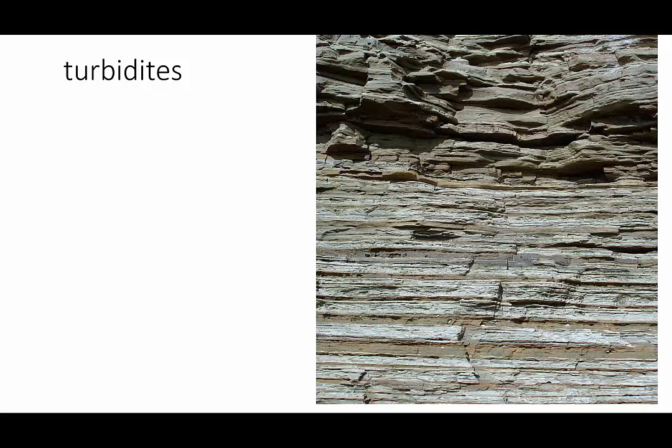The resulting layers of graded beds are called turbidites. These turbidites contain a very messy form of sandstone called graywacke. So when you find turbidites, you know that the rocks started off as turbidity currents deposited at the base of a submarine canyon.